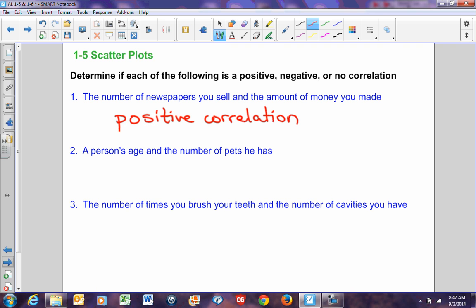Let's look at example number two. A person's age and the number of pets he has. Well, I'm fairly old and ancient, 47. I have two pets. My daughters are fairly young. They also have two pets. They live in the same house that I do. So therefore, age really has nothing to do with the number of pets you have.